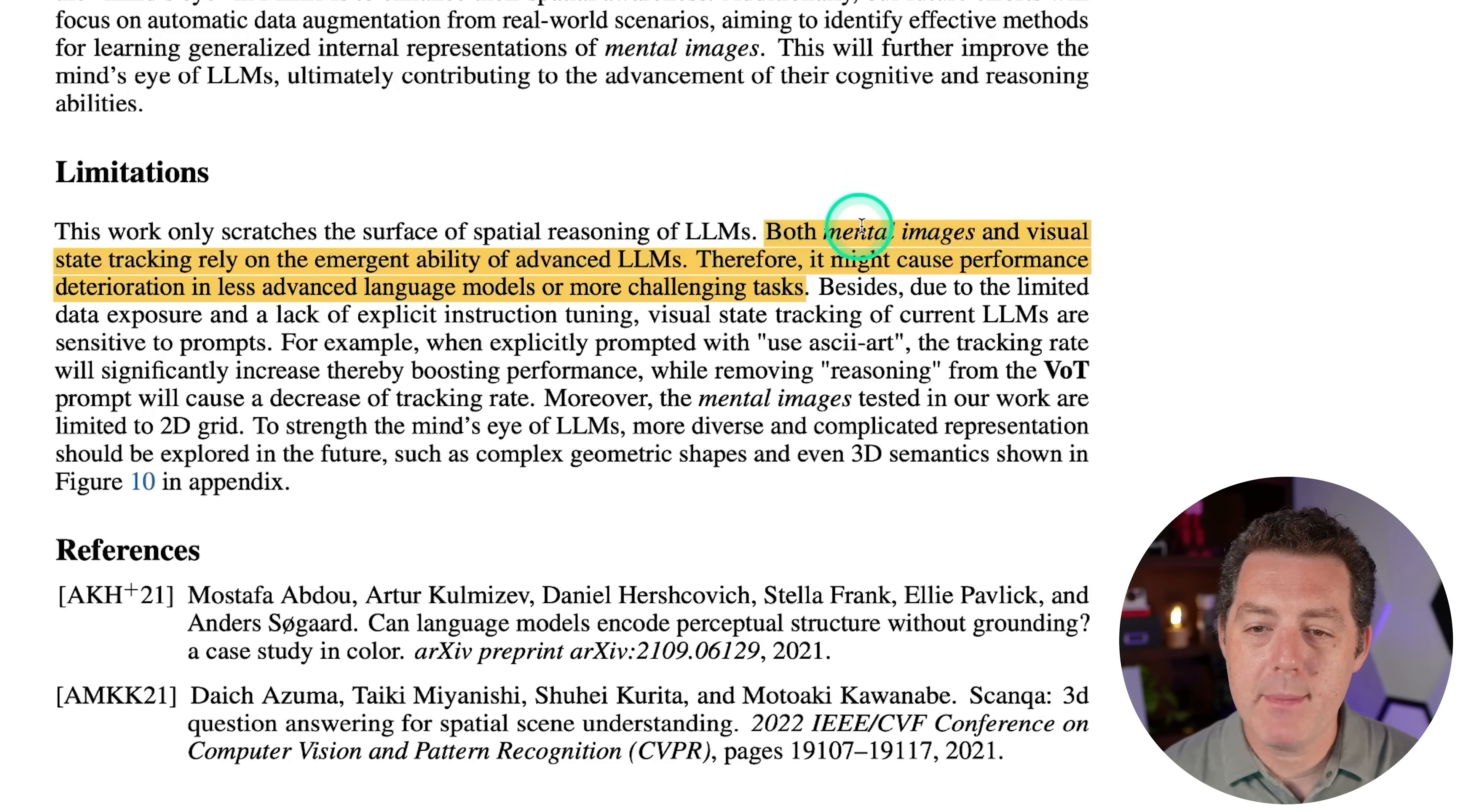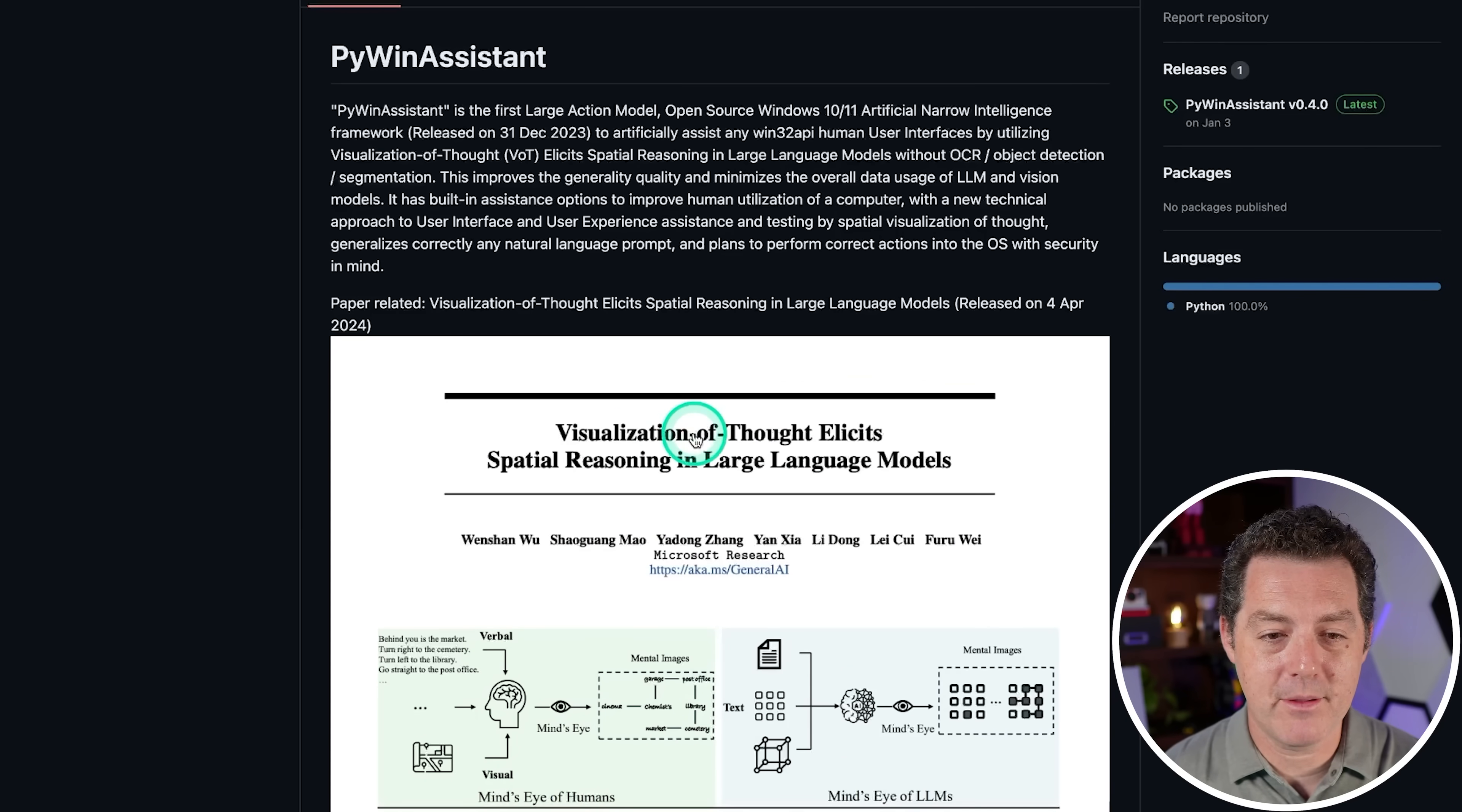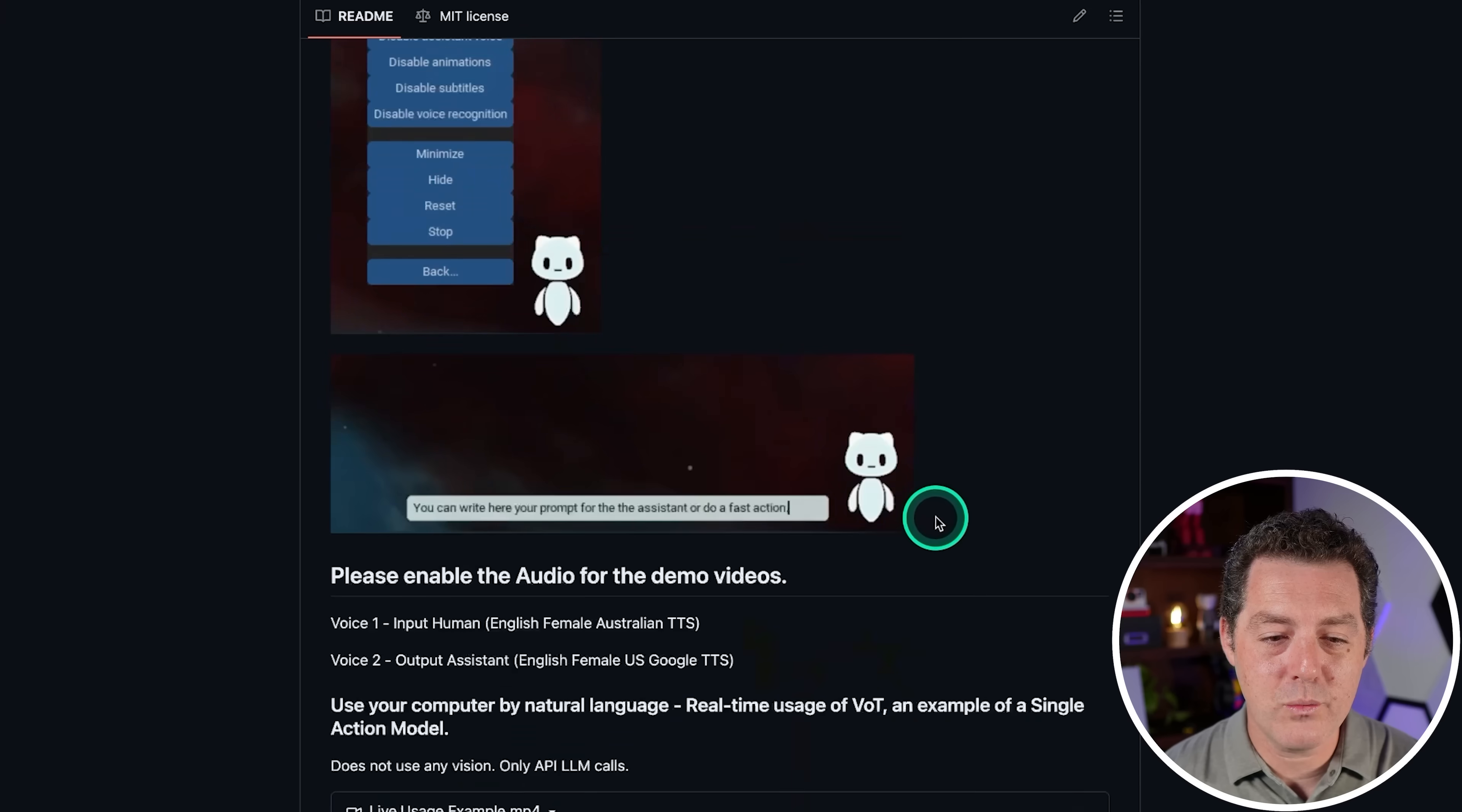So one last thing before I actually show you the examples. What are the limitations? So both mental images and visual state tracking rely on the emergent ability of advanced LLMs. Therefore, it might cause performance deterioration in less advanced language models or more challenging tasks. So here is the project. It's called Pi Win Assistant, and it's described as the first open source large action model generalist, artificial narrow intelligence that controls completely human user interfaces only by using natural language. So they referenced this paper. This is actually how I found the paper. And it uses the same techniques to control a Windows environment. So they give you this cute little character on the right, and you can essentially task it with anything you want.